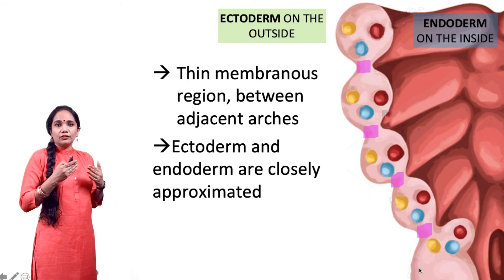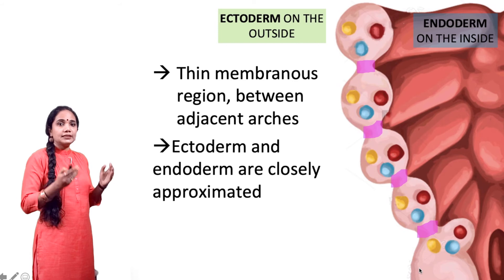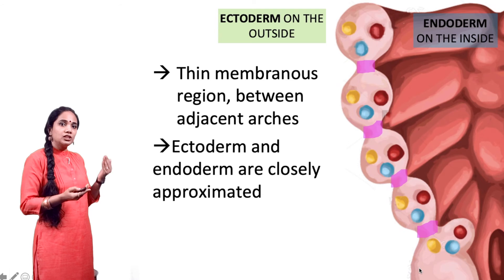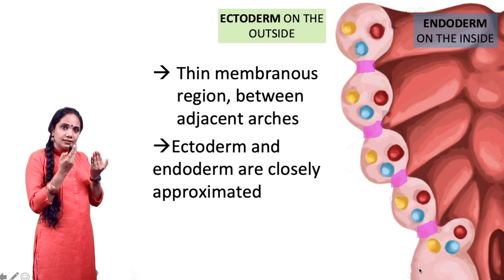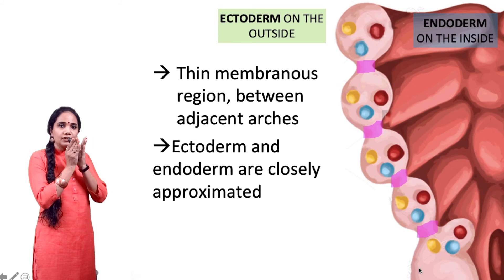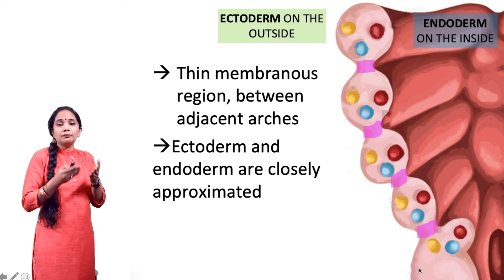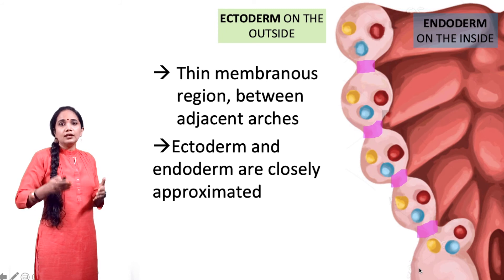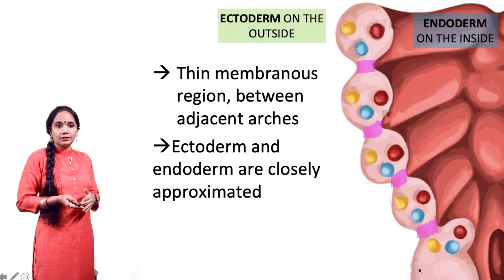Finally, if you look at these pink areas that I have marked, you can see that in those areas there are no other components of the pharyngeal arches — just the ectoderm on the outside and the endoderm on the inside with the intervening mesoderm. There is a very thin mesoderm intervening between the ectoderm and endoderm, closely approximated to each other, and those structures are the pharyngeal membranes.